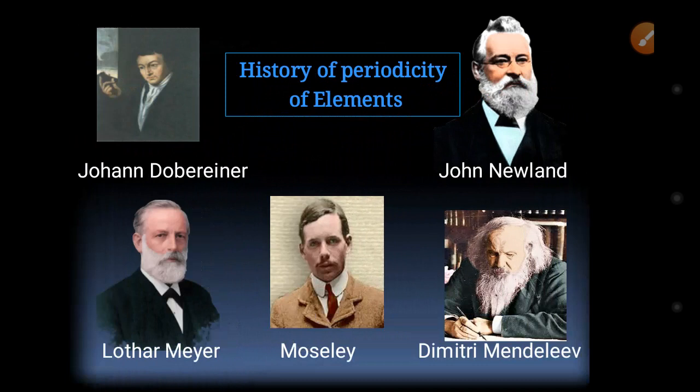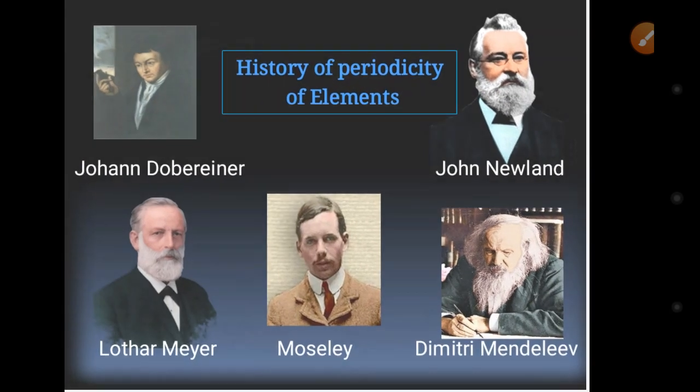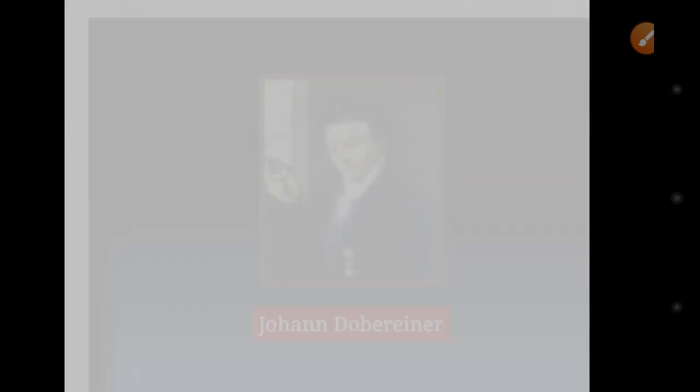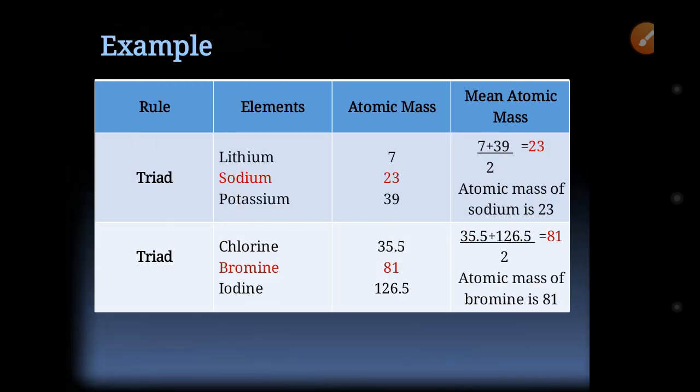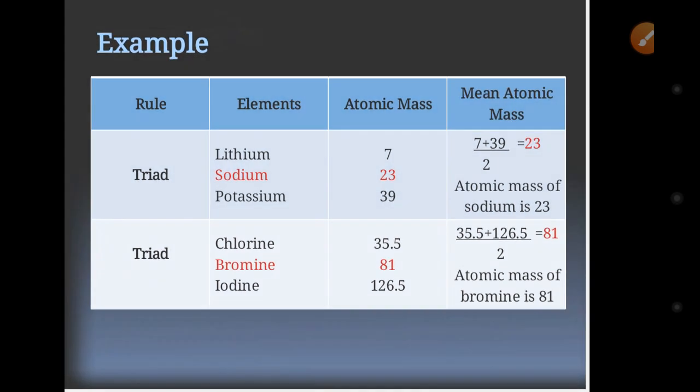The first scientist who presented his work was John Dobereiner. He presented his law in 1829, known as the Law of Triads — arranging three elements in order of increasing atomic masses. He stated that for every triad, the central element's mass is similar to the mean atomic mass of the other two elements. However, his law didn't gain much importance because it was applicable in only a few cases.